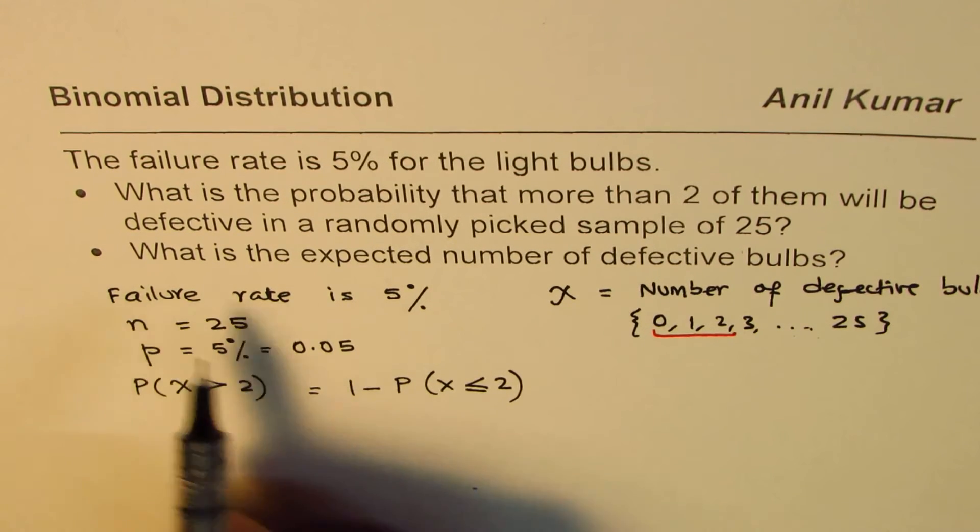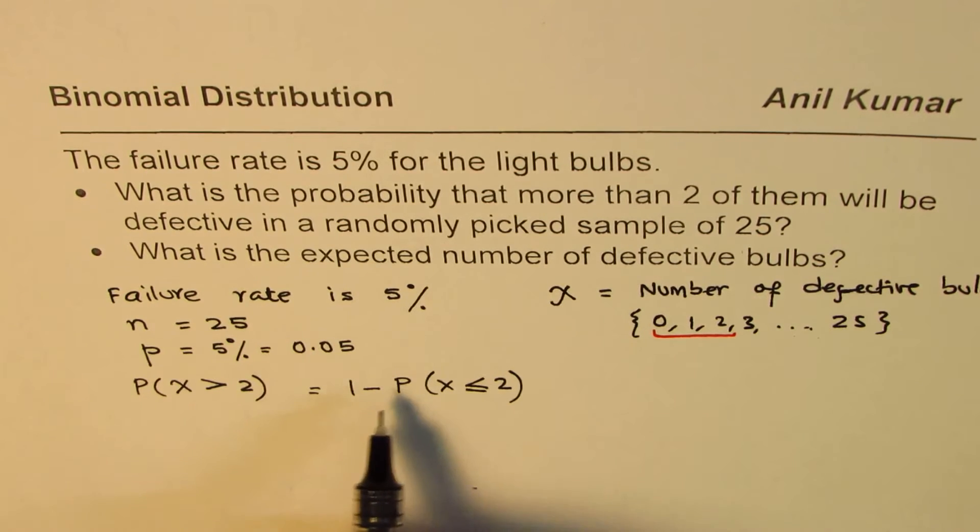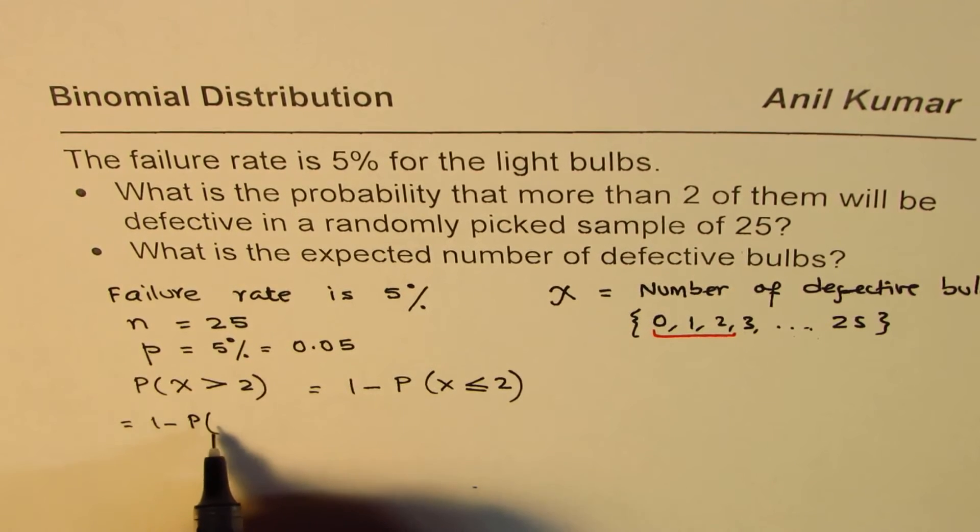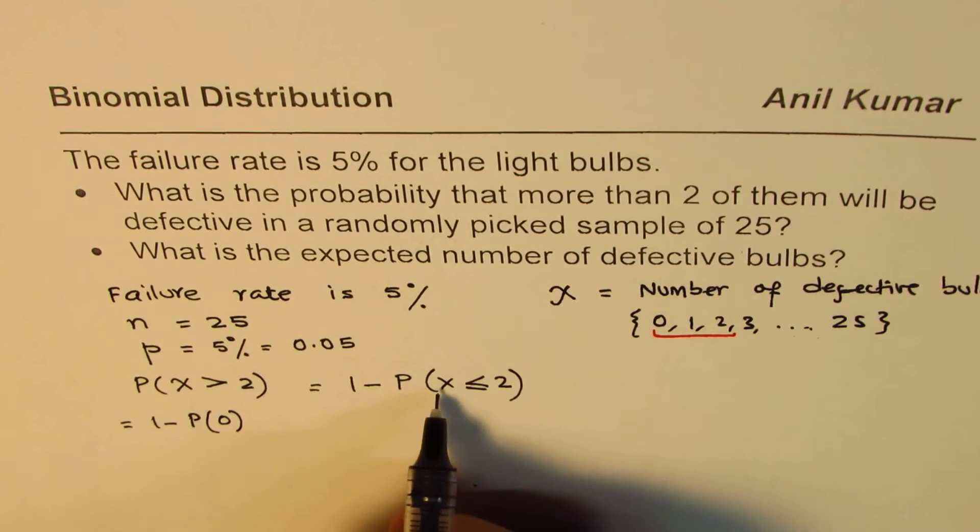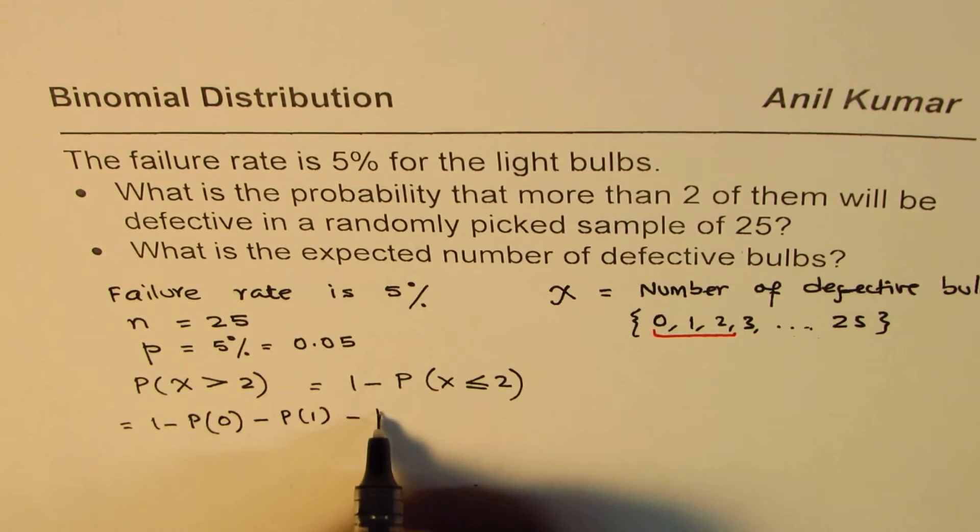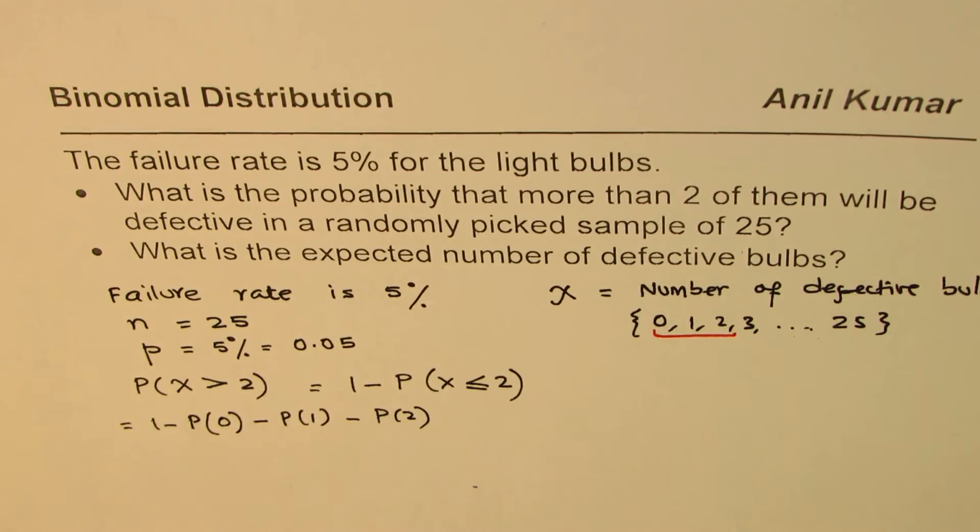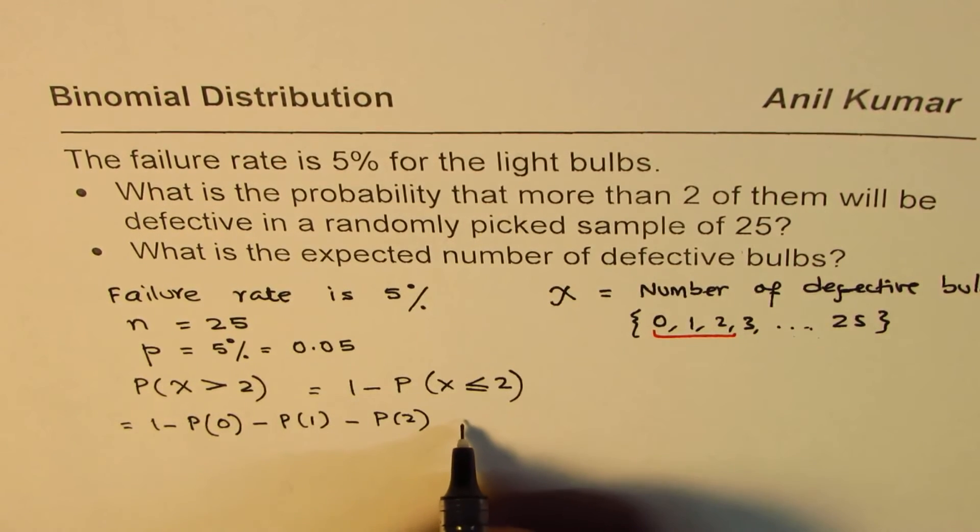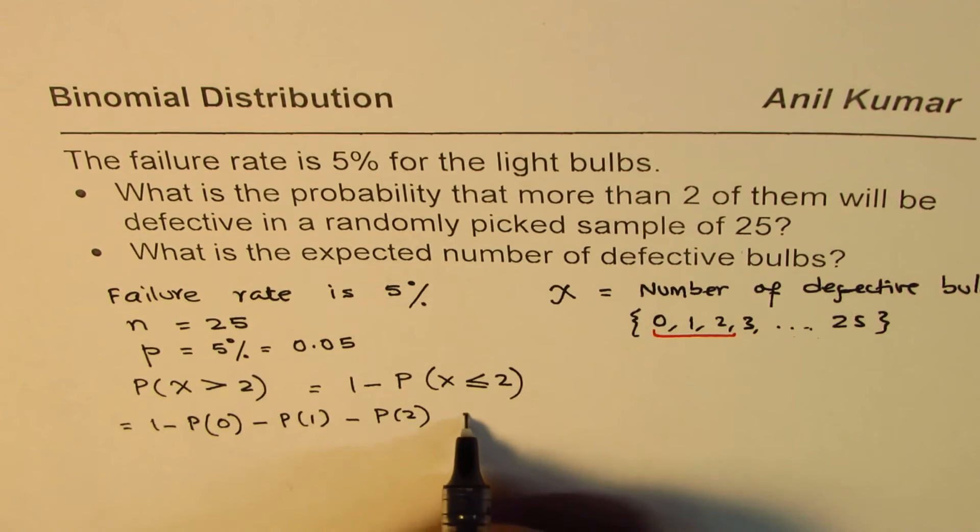For the first one, we are trying to figure out 1 minus the probability that 0 is defective. So we are saying 1 minus the probability for X equals 0, or 1 is defective, or 2 are defective. What does this probability equal?